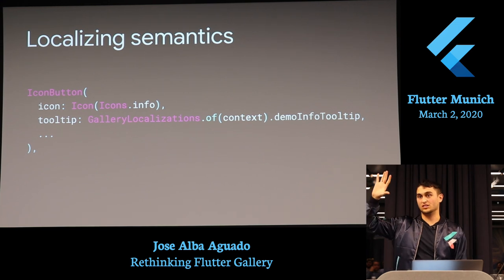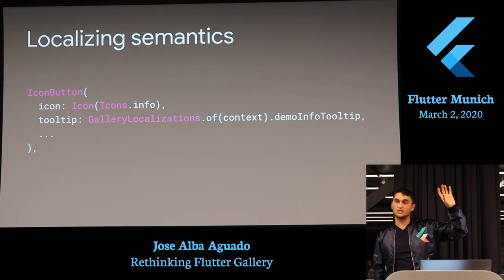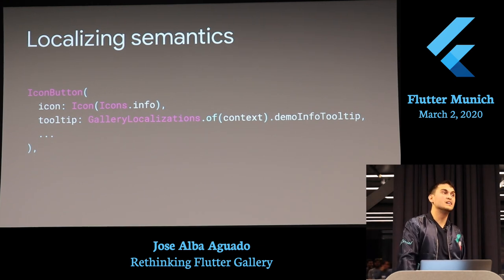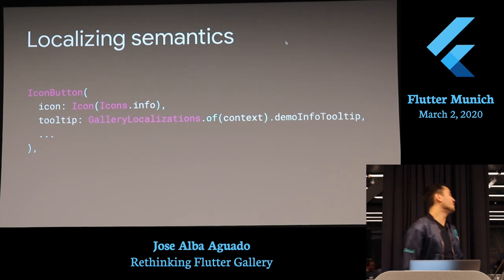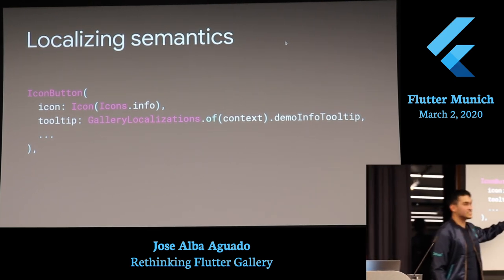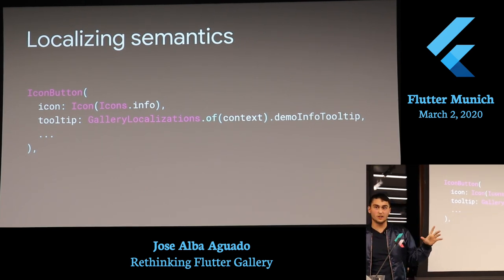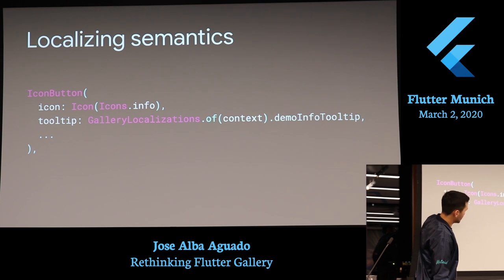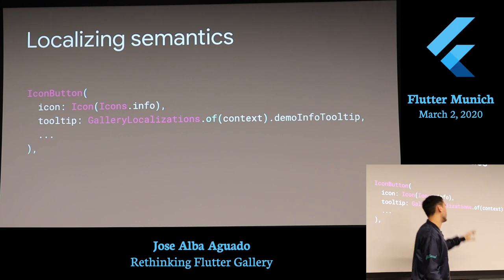The settings icon, which is usually on the right side, will move to the left side if you switch to an RTL language. For gallery localization, we used an ARB file — ARB files are standards for language resources — and then it's connected to that ARB file and reads from it.